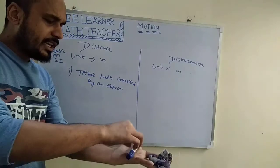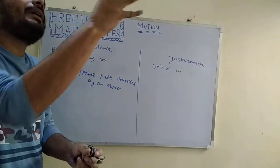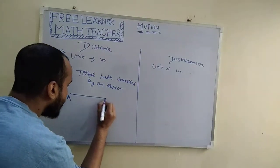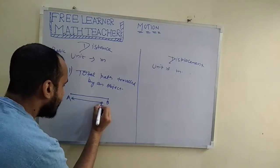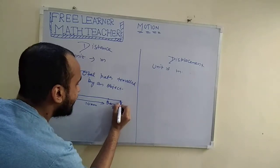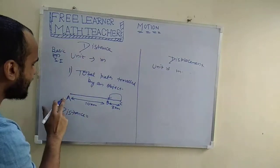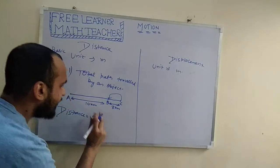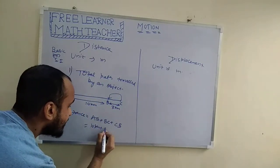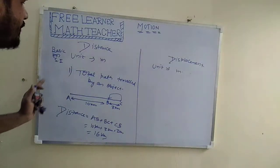Suppose an object is at position A. It goes from A to B and covers 10 km, then from B to C covering 3 km, and then returns from C to B covering 3 km. The total distance is AB plus BC plus CB, that is 10 km plus 3 km plus 3 km, which equals 16 km. So distance is the total path travelled regardless of direction.